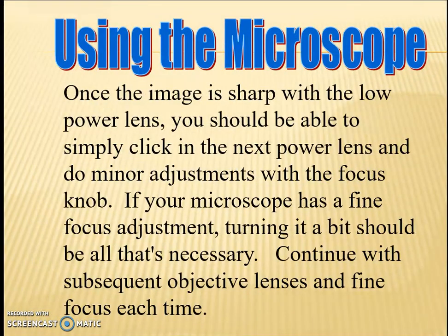Once the image is sharp with the low power lens, you should be able to simply click in the next power lens, which is going to be 10x, and make minor adjustments with the focus knob. If your microscope has a fine focus adjustment, turning it a bit should be all that's necessary. Continue with each subsequent objective lens and fine-focus each time.